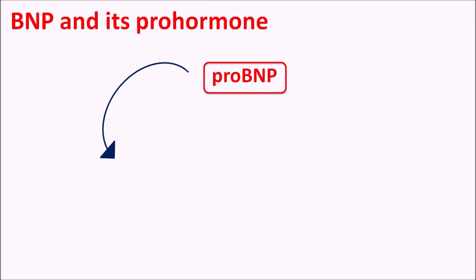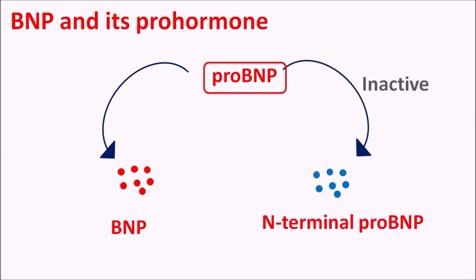BNP is a hormone locally released from its pro-hormone during stretching of ventricular walls. Pro-BNP can be cleaved to produce the active form of the peptide — BNP — or it can be cleaved into N-terminal pro-BNP (NT pro-BNP), which is the inactive form. In patients with heart failure, both BNP and NT pro-BNP are elevated, and both can be used as markers for heart failure.